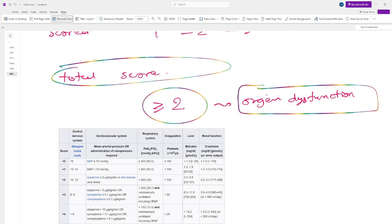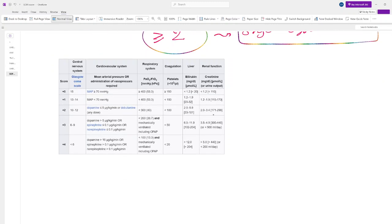This is the scoring system here. I took it from the internet. You can see here the CVS system, cardiovascular system, respiratory system, coagulation, liver and renal function, Glasgow Coma Scale. A score of 15 is zero score. Mean arterial pressure more than 70 is good. PaO2/FiO2 more than 400 or equal to 400 is good. Platelet counts more than 150,000 is good. Bilirubin should be less than 1.2. Creatinine should be less than 1.2.